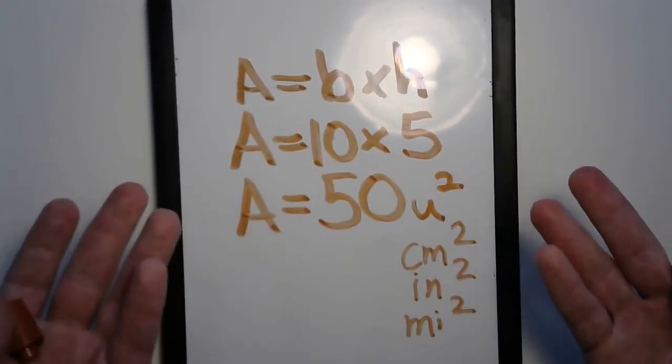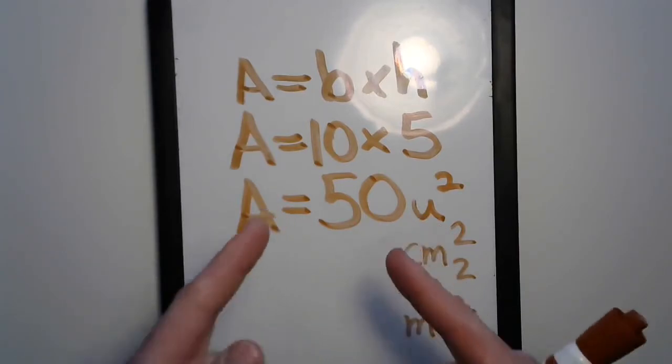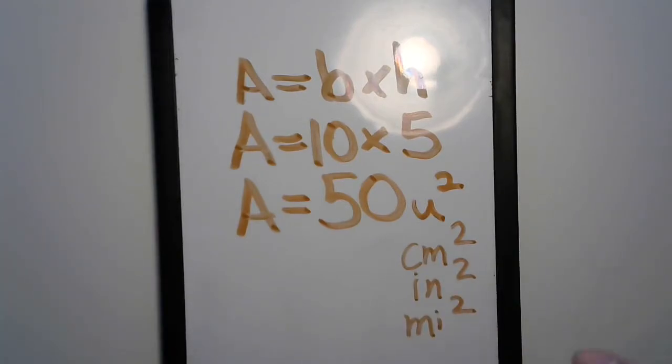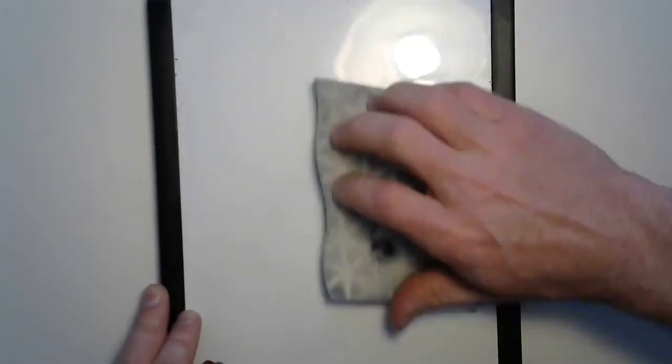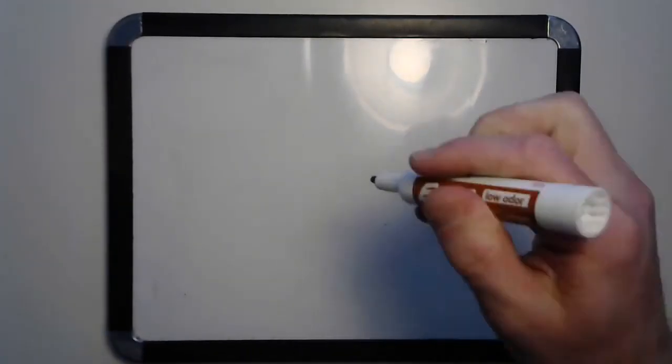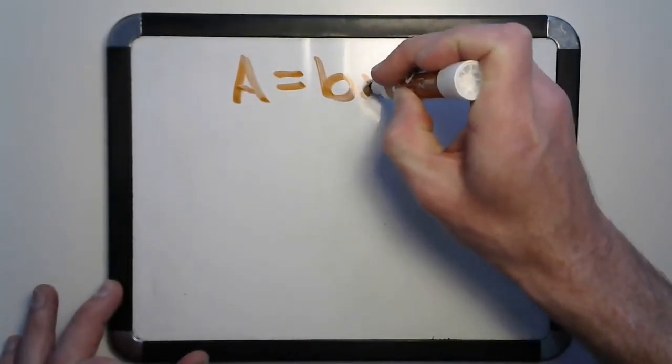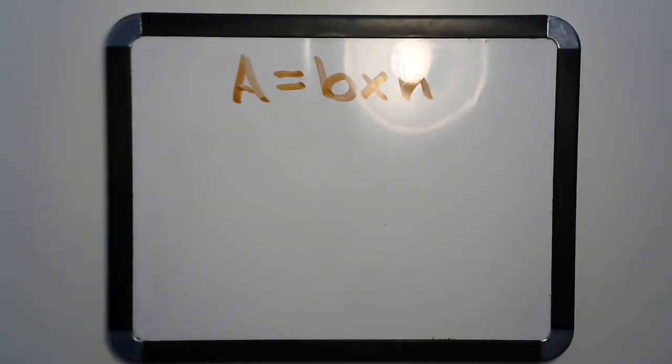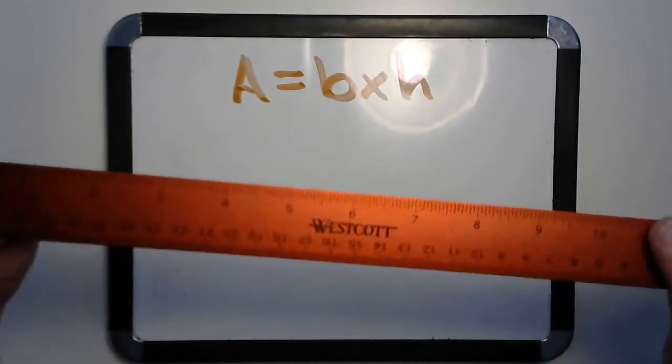Now you can easily use this to find the area of any rectangle. For example, this whiteboard is actually a rectangle. We might as well use it to solve. What do we need to do first? Let's write down our equation: area equals base times height. Then we need to find the base and the height. Good thing I have this ruler here.